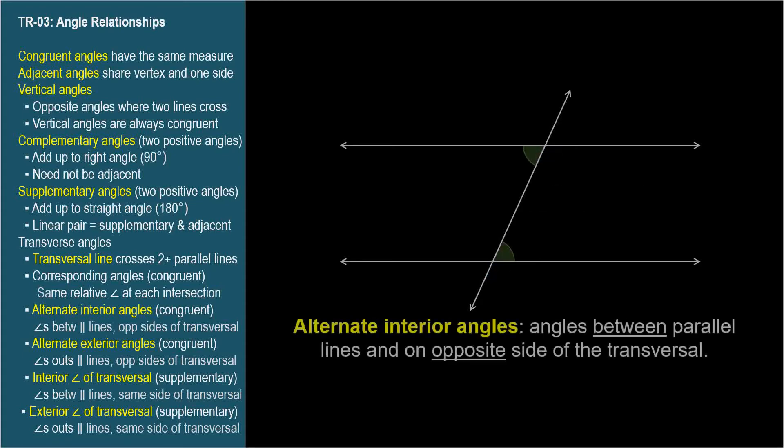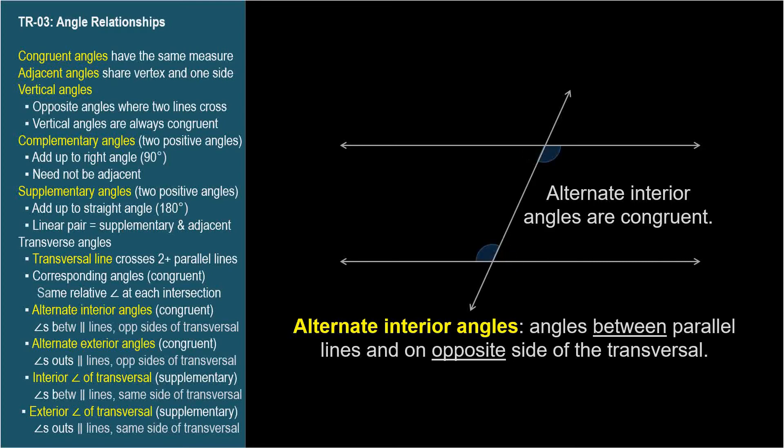Alternate interior angles are the pairs of angles on the inside of the parallel lines and on opposite sides of the transversal. Alternate interior angles are also congruent.